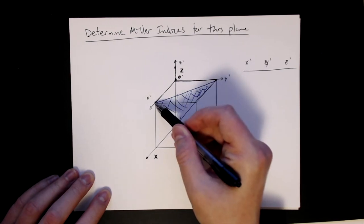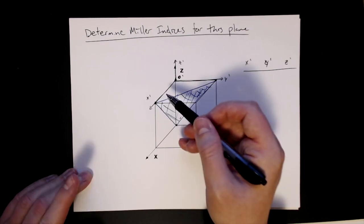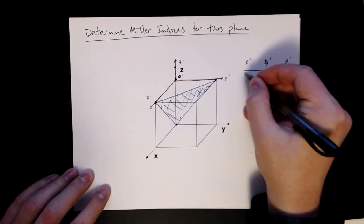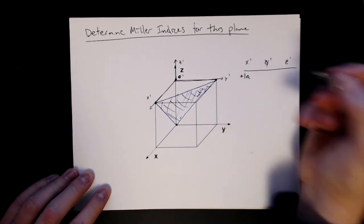And that's the edge of the unit cell. So that means that that length is equal to 1 of that edge length, a. So 1a. I can put a positive there just so that you know that it's positive.